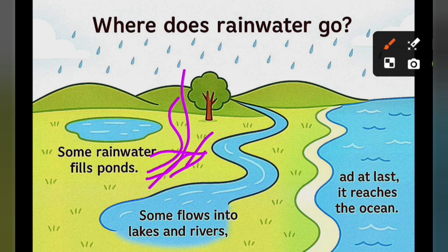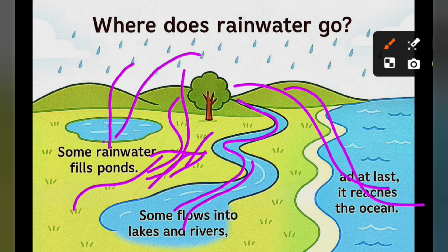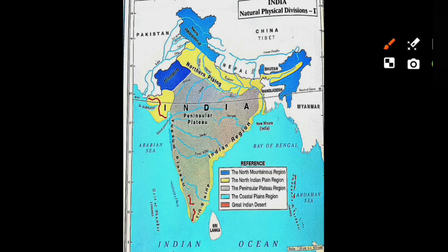Some water goes into ponds or tanks, some flows into lakes and rivers, and finally into the sea or ocean. So this is called the drainage system. India's drainage system has evolved with three physiographic units — three physical regions.